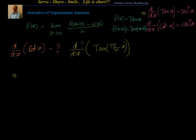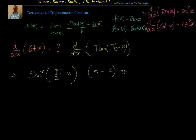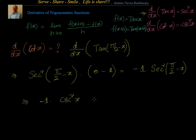We apply the chain rule, starting from the outer function. The outer function is tan, whose derivative is sec². So we write sec²(π/2 - x), then multiply by the derivative of the inner function (π/2 - x), which is -1. This gives -1 · sec²(π/2 - x). Since sec(π/2 - θ) = cosec θ, this becomes -cosec²x.